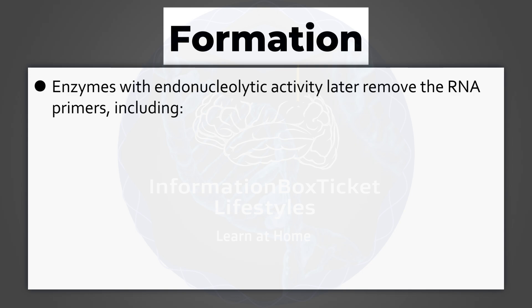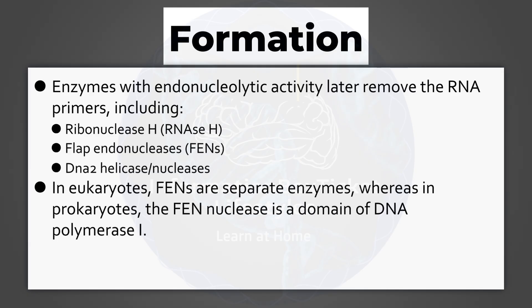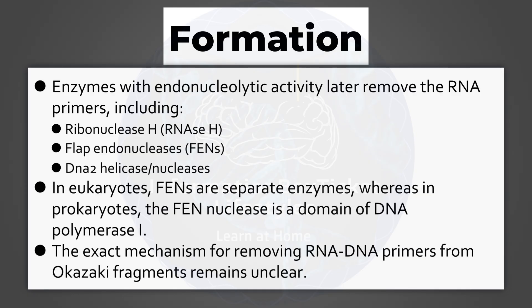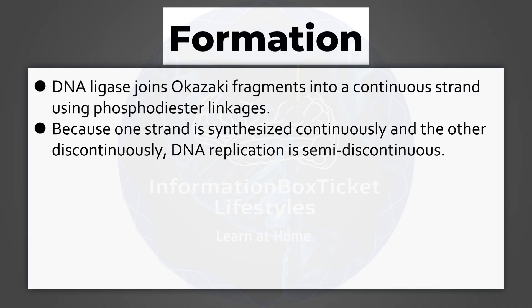Enzymes with endonucleolytic activity later remove the RNA primers, including ribonuclease H, flap endonucleases, and DNA2 helicase/nucleases. In eukaryotes, flap endonucleases are separate enzymes, whereas in prokaryotes the flap endonuclease is a domain of DNA polymerase I. The exact mechanism for removing RNA-DNA primers from Okazaki fragments remains unclear. DNA ligase joins Okazaki fragments into a continuous strand using phosphodiester linkages. Because one strand is synthesized continuously and the other discontinuously, DNA replication is semi-discontinuous.